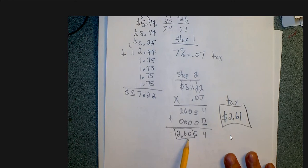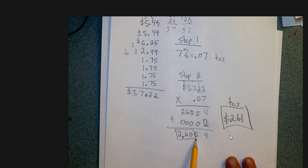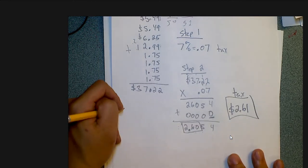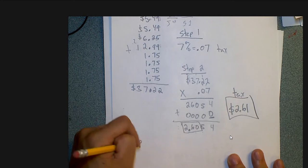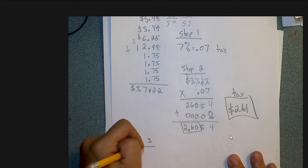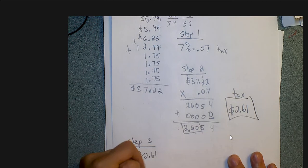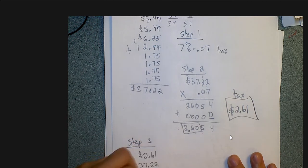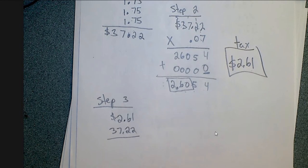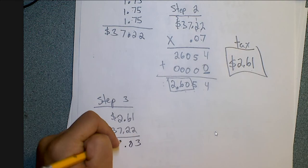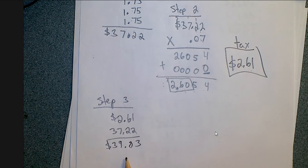Some people ask how I got the 1 — I look at the 5 in the next decimal place: because it's 5 or more, I add 1 more, so that 0 becomes 1, giving me $2.61. For step 3, I add $2.61 to $37.22. That gives me $39.83 with tax included.